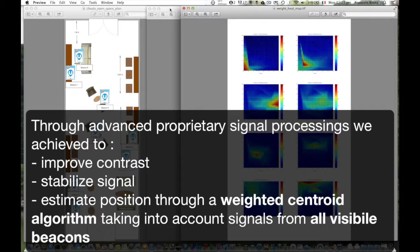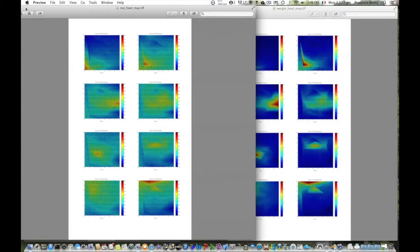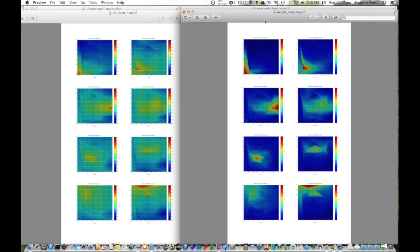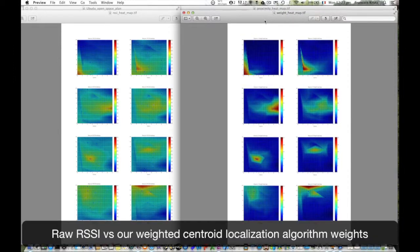And you can see now the comparison between the RSSI and our filtered signal. You can see the contrast is much sharper, the zones are much well defined and still continuous values, so you won't have the problem of thresholds that you have with the proximity.